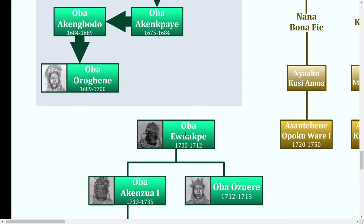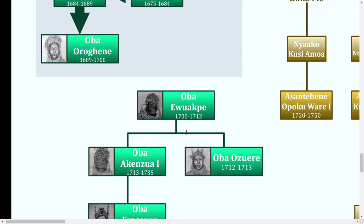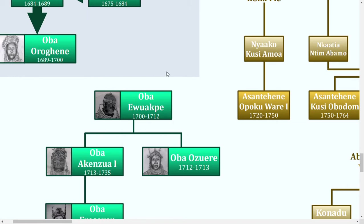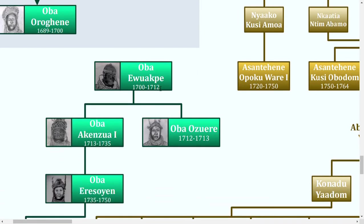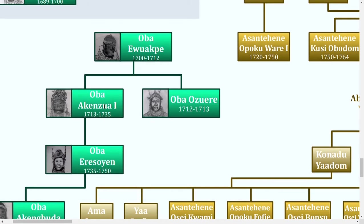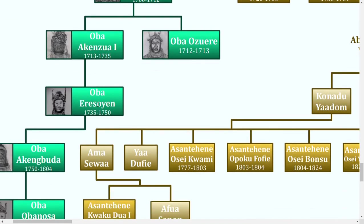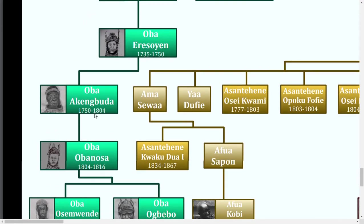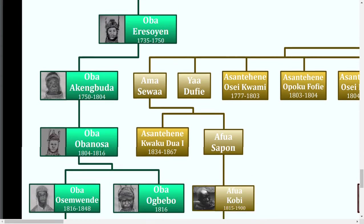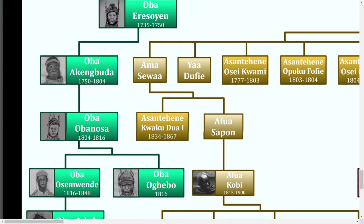The next ruler made dynastic succession a lot more clear — that being Oba Ohuakpe. The genealogy suddenly starts to get a lot more clear. He passed it to his son Uzwere, who passed it to his brother Oba Akanzua I, who passed it to Oba Erasoyan, who passed it to his son Oba Akenbuda, who reigned for an astonishing 54 years — a pretty amazing feat — who passed it to his very aging son Oba Nosa.